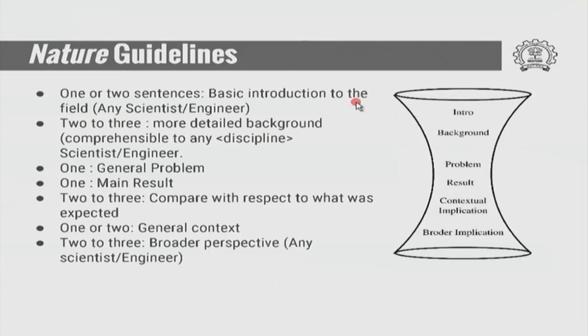A nice analogy you can give your students: think of a university. The first statement has to be understood by everybody in your university. The second statement is more specific and has to be understood by people in your department — that is the background part. Then, two or three sentences, and then one statement of the problem. Notice that the problem and the result are just one statement each. Once you have the result, what does it imply to your department, and then broadly, what does it imply to society? You started with the university, came to the department, stated the problem, stated the result, and then go back to the department and to the broader society.